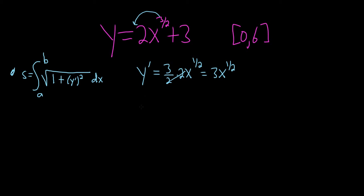So now we just have to square it. So y prime squared. Well, this basically means we square all of this, so 3x to the 1 half squared. So we square the 3, so that gives us 9.